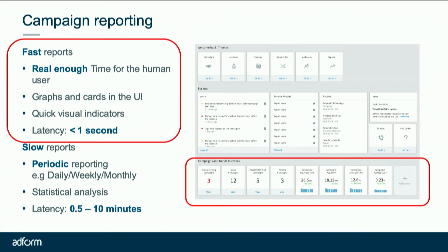What I want to talk about is the fast reporting — where it's real enough time for a human to see the change, so about a second or so. An example is a bunch of metrics on a screen that update in front of the user to show the change. There are about a million people who can tell you every cool way of generating a report from data. I'm just going to talk about this fast stuff — less than a second, real-time-ish statistics.